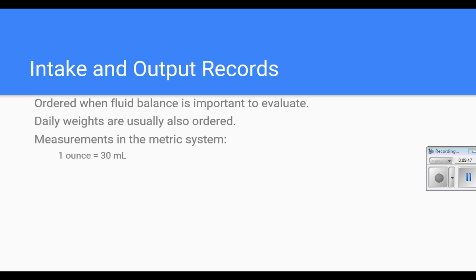Fluid measurements are in the metric system. One ounce is equal to 30 milliliters, and milliliters are the same as cc's — cubic centimeters. One pint is equal to approximately 500 milliliters. One quart is equal to 1,000 milliliters, or one liter. The metric system is based on a scale of 10. It's important for you to become familiar with it because that is what we use in healthcare.